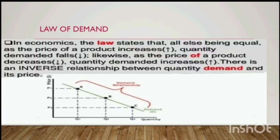Now we are talking about the law of demand. What is the law of demand? It states that price and quantity demanded of a commodity move in opposite directions. We take two variables: price and quantity demanded. These two move in opposite directions. When the price of a commodity rises, the demand for it falls. When the price falls, demand rises. This is called the law of demand.